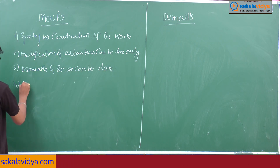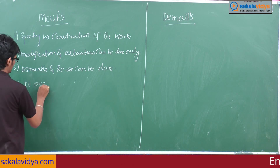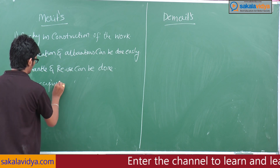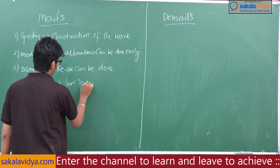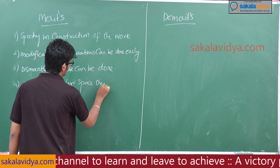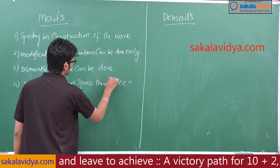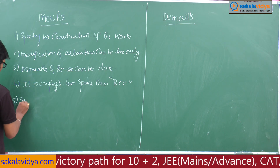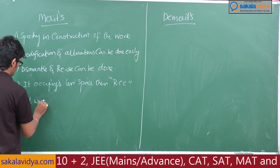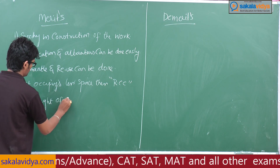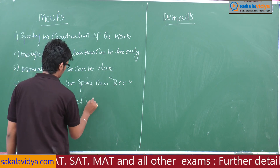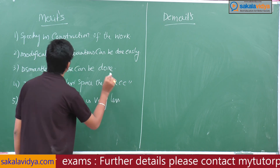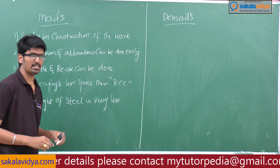The fourth merit is that steel structures occupy less space than RCC structures. The fifth merit is that the self weight of steel is very less.